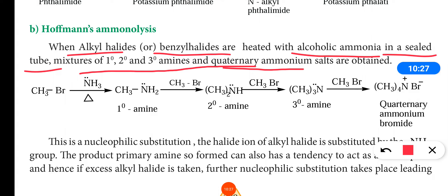A mixture of primary, secondary, and tertiary amines, along with quaternary ammonium salt, is produced. If nitrogen is linked with only one carbon atom, that is a primary amine. If linked with two carbon atoms, that is a secondary amine. Linked with three carbon atoms means tertiary amine. If linked with four carbon atoms, that is called a quaternary ammonium salt.